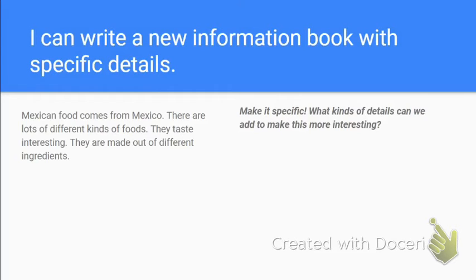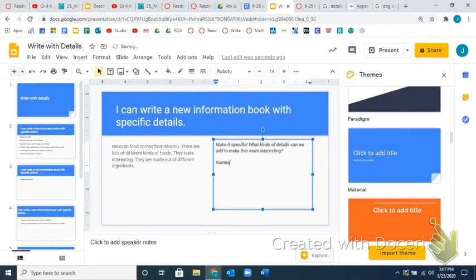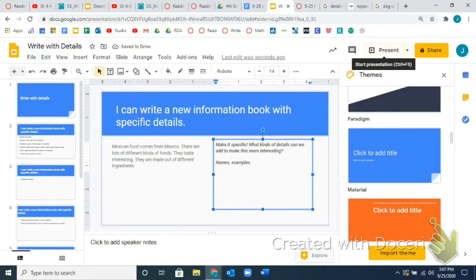Maybe you thought we could come up with different places in Mexico — Mexican food comes from Oaxaca, Mexico City, the Yucatan. If you know those places, you can be more specific by adding names. For 'There are lots of different kinds of food,' we could give examples: there are tacos, tortillas, quesadillas, lettuce and tomato in the food, tortas, and pozole, the soup. We can name examples of different foods.